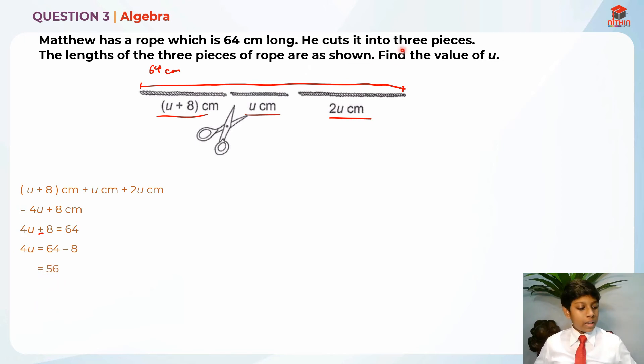And they are asking us to find the value of U. So U is basically 1 unit. In order to find 1U, we take 56 divided by 4, which will give us 14. And 14 is the answer for question 3.